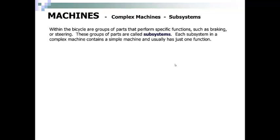Within the bicycle are groups of parts that perform specific functions such as braking or steering. These groups of parts are called subsystems. Each subsystem is a complex machine that contains a simple machine and usually has just one function.